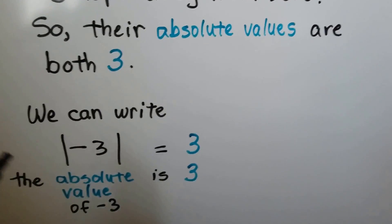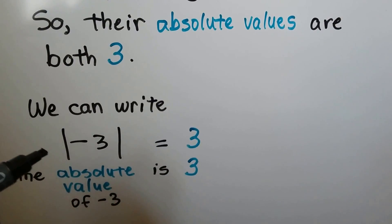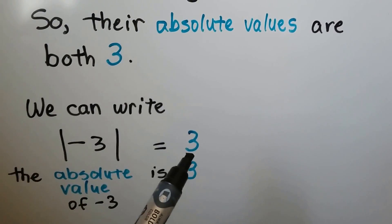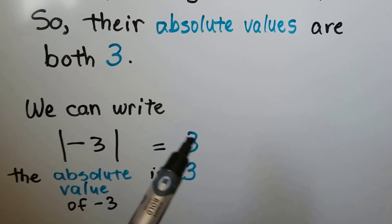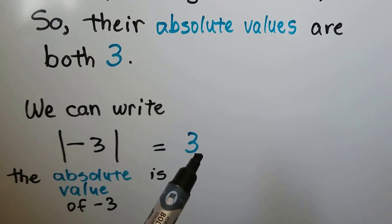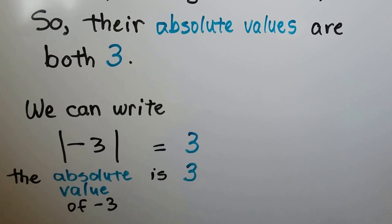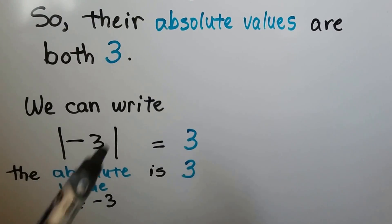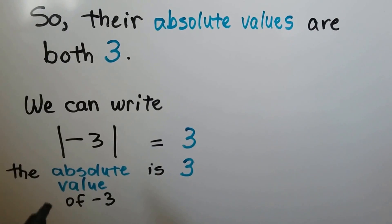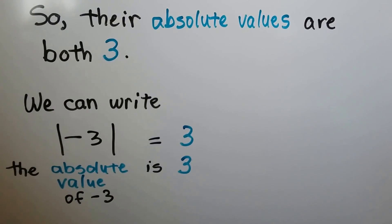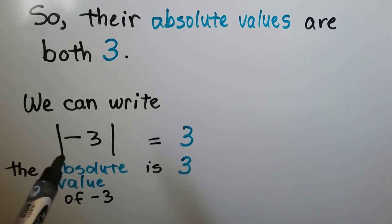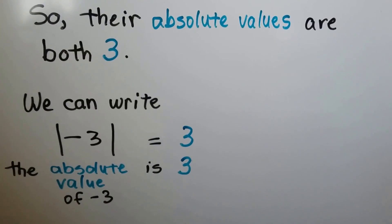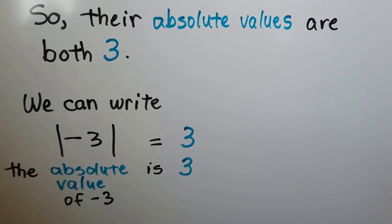We can write: the absolute value of negative three is three. That's its absolute value — that's how far away it is from zero. And when you see these bars, it's asking you for the absolute value of negative three, meaning how many hops away it is from zero.